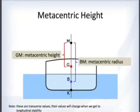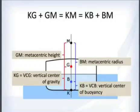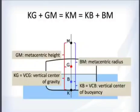The metacentric height is the distance from the center of gravity G up to M — this is GM. The metacentric radius is BM. K is the intersection of the centerline with the keel, so KM is the total distance from the keel to the metacenter.